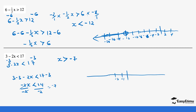If we were to show that on a number line, we go to negative 7. The values are greater than negative 7, so our arrow goes in the positive direction. The value of negative 7 is not part of the solution, since there is no equal sign, so we leave it open.